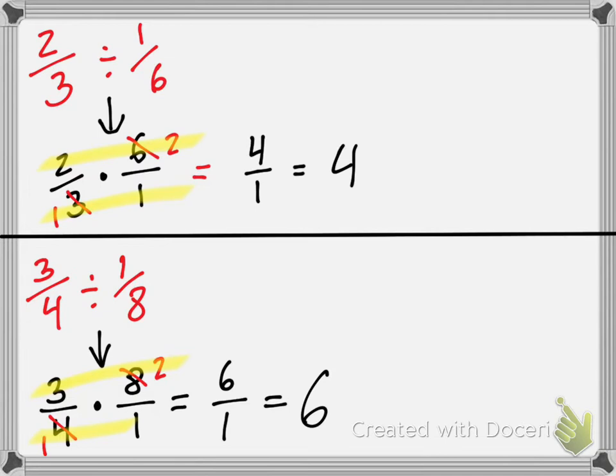Remember, you cannot cross-cancel with division. As Lucas asked earlier in this lesson, can I cross-cancel if there's a smaller number in the numerator and a bigger in the denominator? You can cross-cancel whenever you want if they're both divisible by the same thing. It doesn't matter what numbers they are — if they are both divisible by the same thing, then yes, it works.